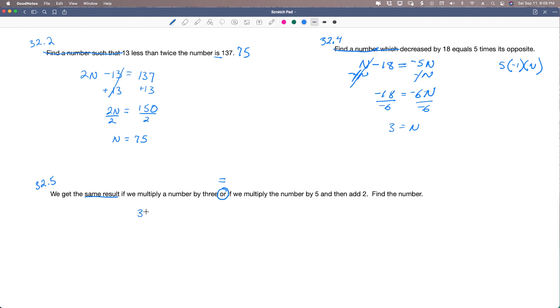If we multiply a number by 3, it would be 3n, or becomes our equal sign. We multiply the number by 5 and then add 2, so 5 times n plus 2. Let's find the number. So let's bring 5n over here by subtracting it from both sides. That cancels. So that means we have negative 2n equals 2. We divide both sides by negative 2. That means that n is equal to negative 1. And that is our number.